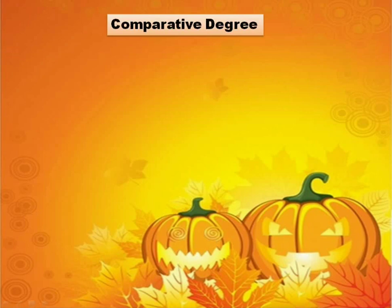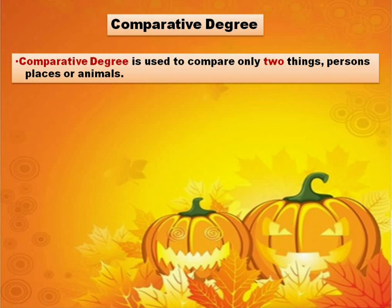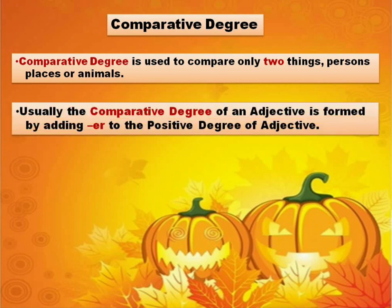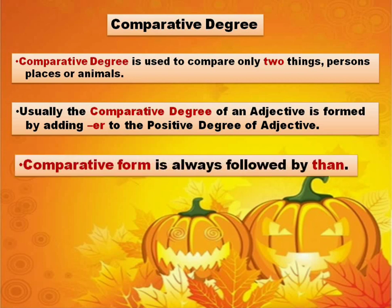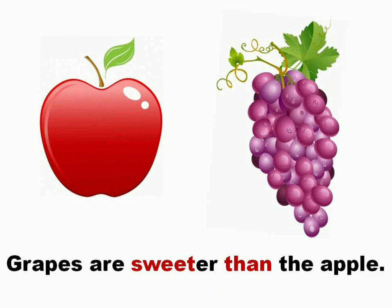Comparative degree — the second type of degree. Comparative degree is used to compare only two things, persons, places, or animals. Usually the comparative degree of an adjective is formed by adding 'er' to the positive degree. The comparative form is always followed by 'than'. After comparative degree you will always find the word 'than'. For example, grapes are sweeter than the apple. We are comparing two things — apple and grapes — so we added 'er' to 'sweet' to make 'sweeter', followed by 'than'.